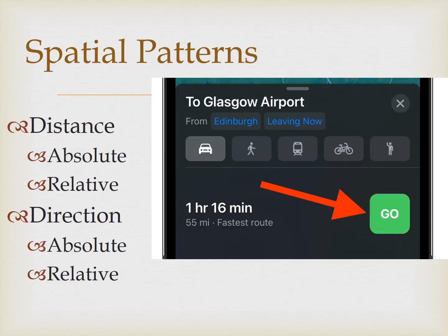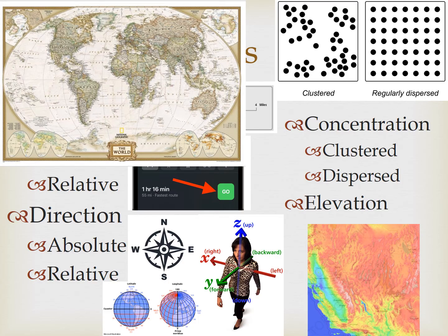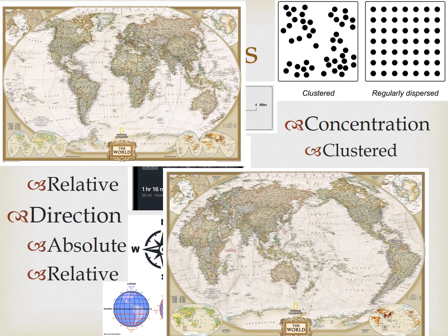Relative distance can express distances in concepts like time or money. Think about how long it takes you to get to the grocery store from your house. The absolute distance doesn't change, but the relative distance might change if you have to walk there versus if you take your bike or ride in a car. Map projections can distort distance — combined with projections that may be centered on the Atlantic Ocean, that can make the United States and Russia seem very far apart, but a Pacific-centered map shows that their absolute distance is quite close.